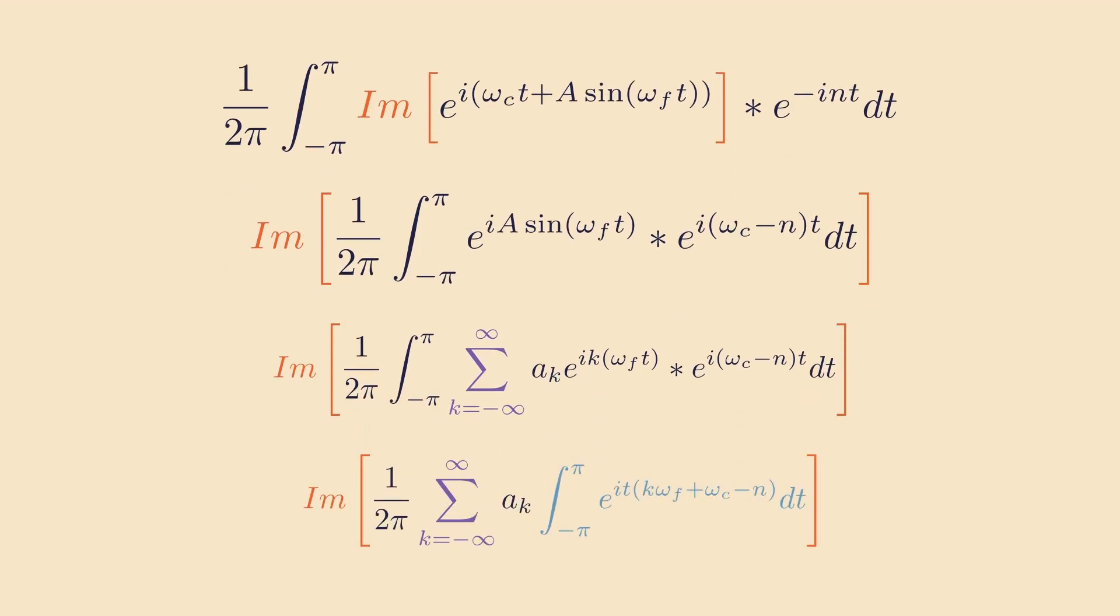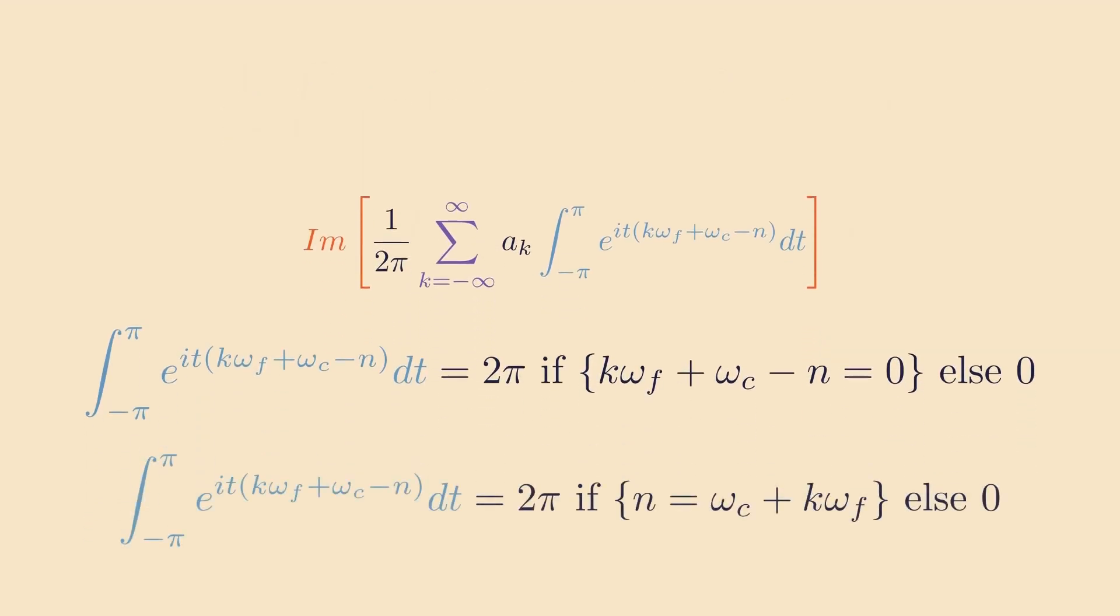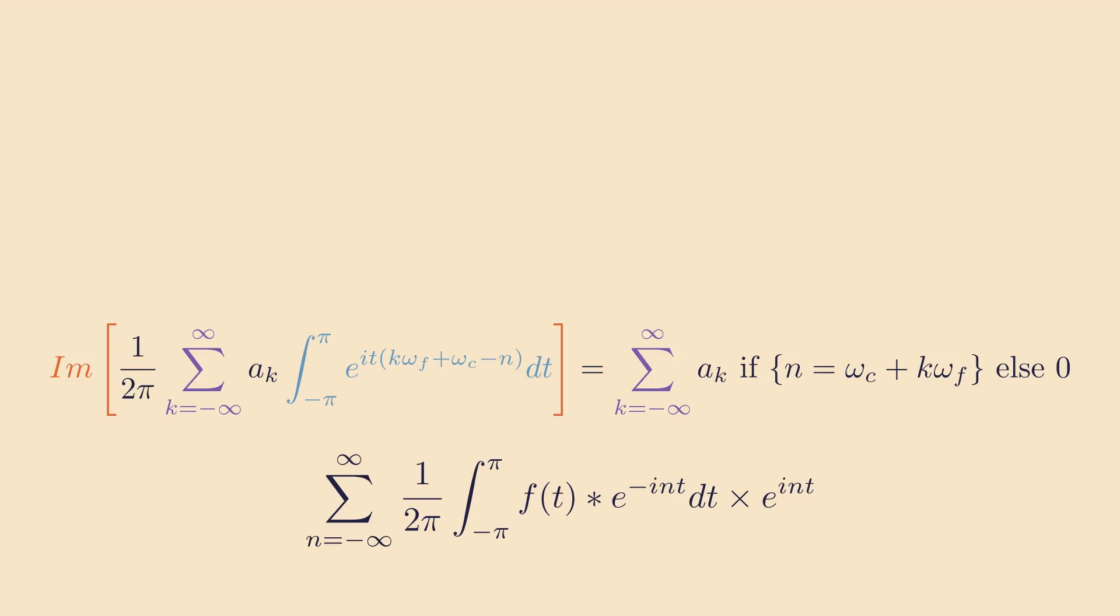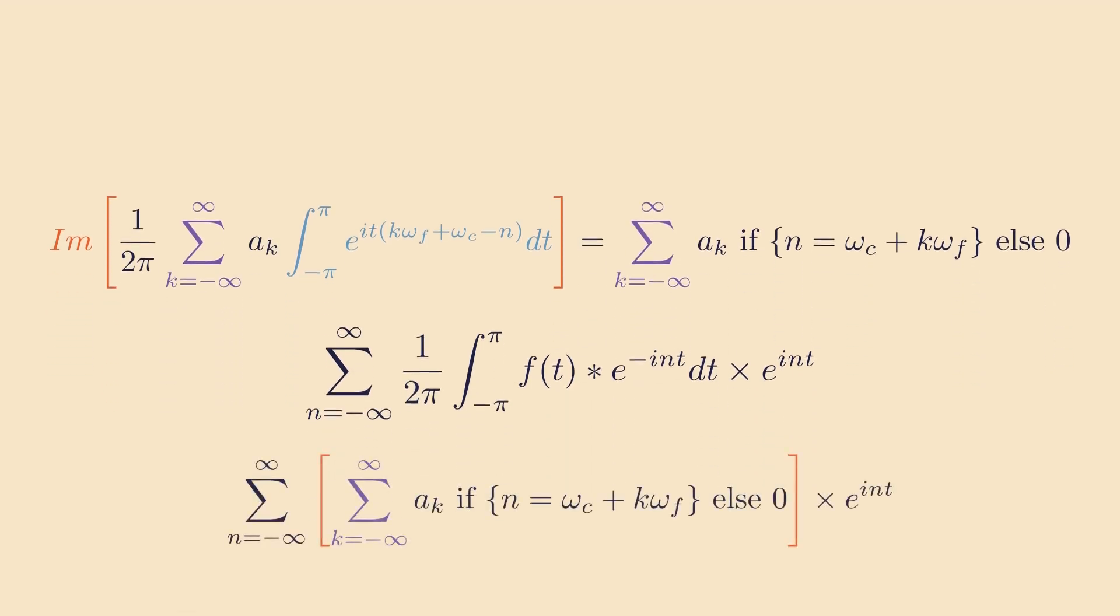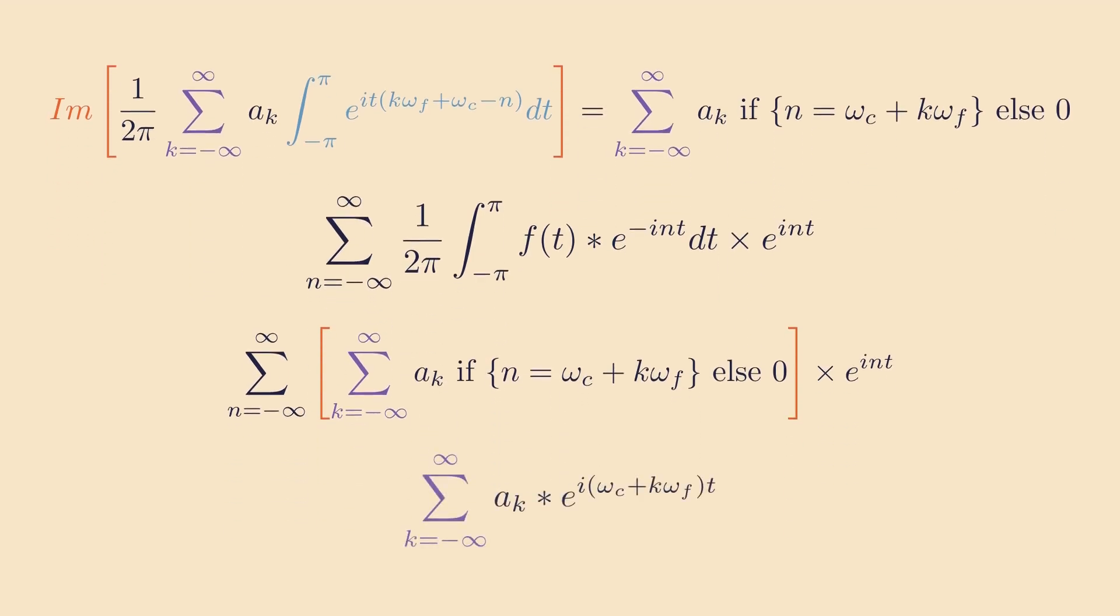It's actually a well-known trick that this integral is always zero, unless the exponent itself is zero, then it will equal 2π. Thus, we'll rewrite this as a piecewise function, and this lets us simplify the whole integral. Now adding back the summation, we have this expression. But because for every k, there's exactly one n that satisfies the condition, we can cancel the summation to have this final expression as our Fourier series.